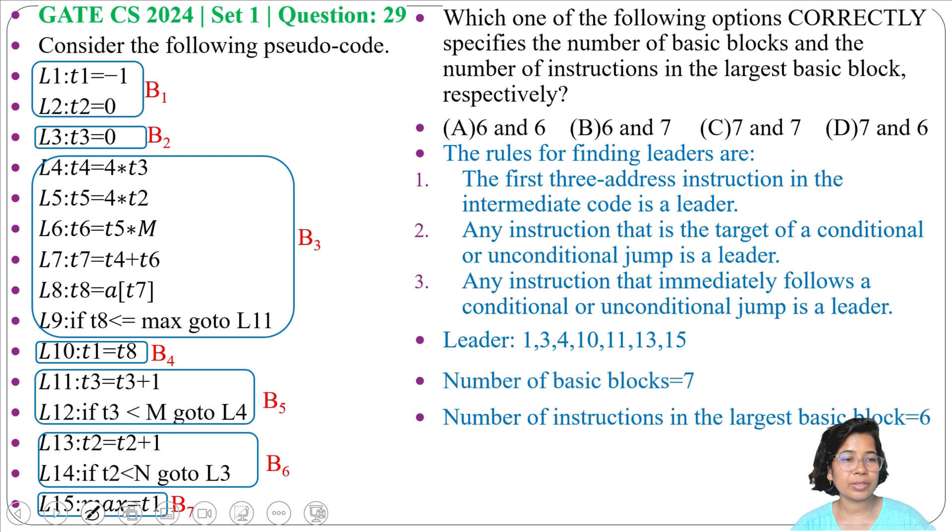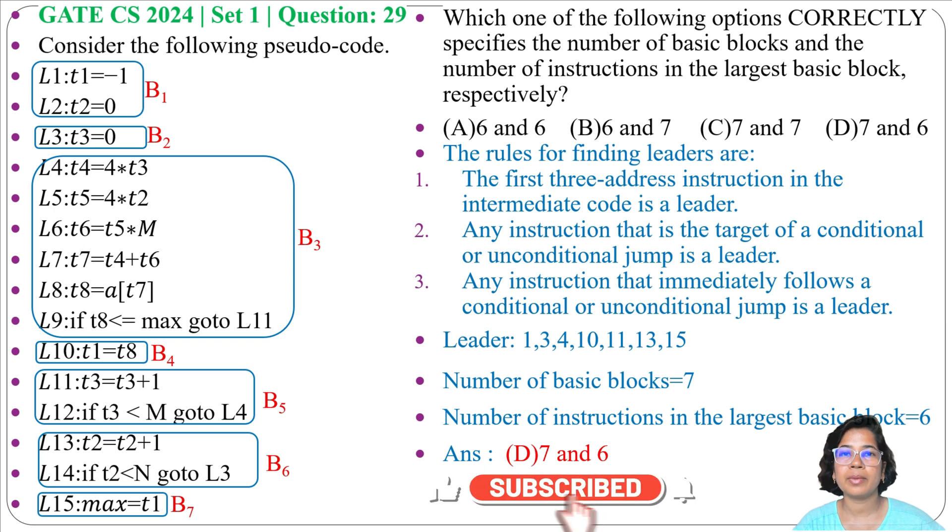Checking the options, option D: seven and six. I already discussed how to design flow graphs in Chapter 3 of Compiler Design lecture. Just go through it, and if this lecture is helpful for you, please like, share, and subscribe. Thank you.